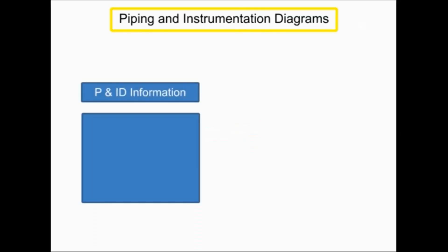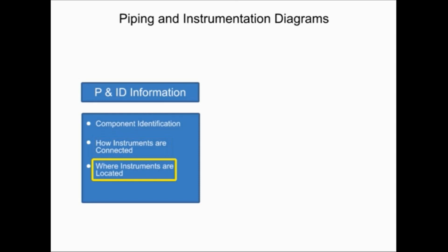Piping and instrumentation diagrams provide information that includes component identification, how instruments are connected, where instruments are located, and their function within a process.